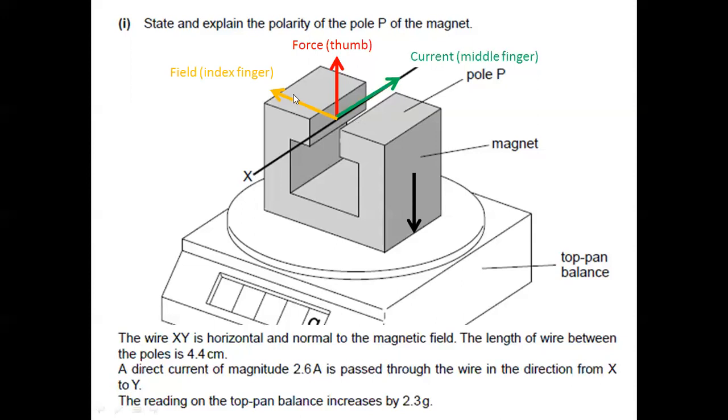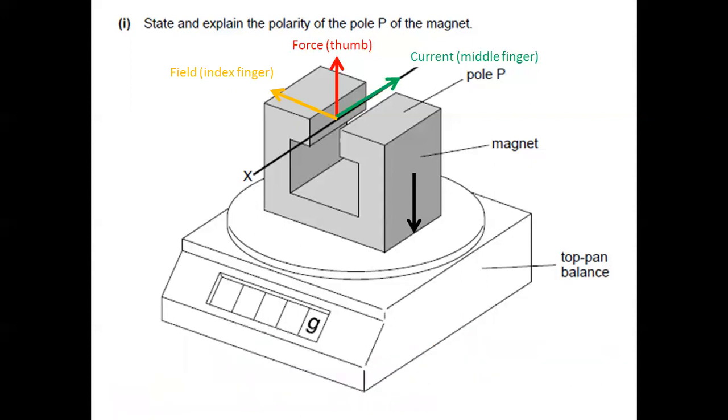we know that magnetic field lines do not terminate on a pole. Magnetic field lines are continuous. So by convention, we know that